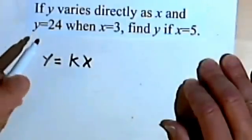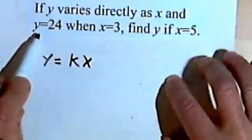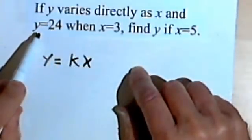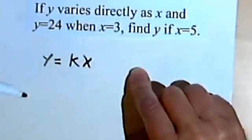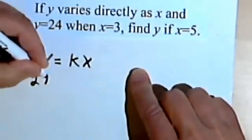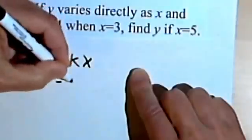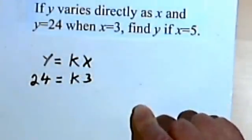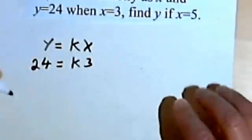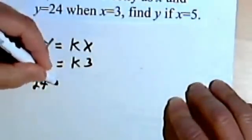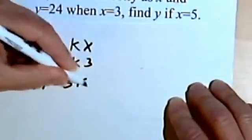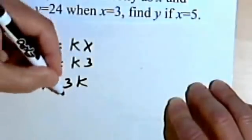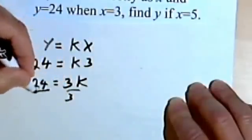And now the next step is that when y is 24, x is 3. So let's replace the y and the x with the numbers we're given. So we're going to have 24 equals k times 3. And I'm just going to rewrite that as 24 equals 3k, because that's a form we're all more used to.